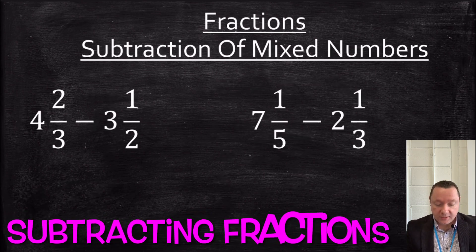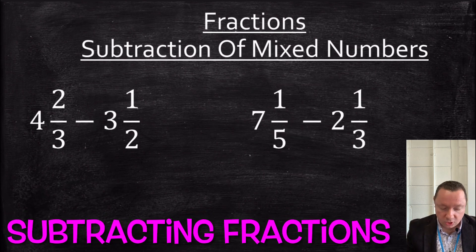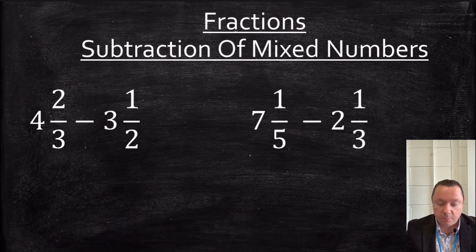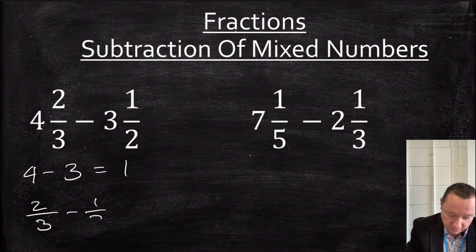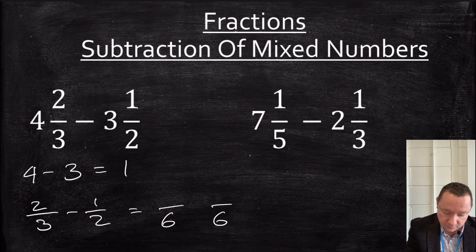Okay, let's look at a couple of examples of subtraction of mixed numbers. So I've got 4 and 2 thirds minus 3 and a half. So I can do 4 minus 3 to start with and get 1. And then I've still got 2 thirds minus 1 half. So again, common denominator, 3 times 2 gives me 6.